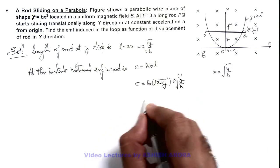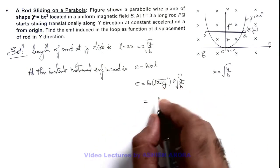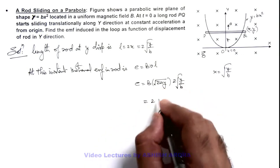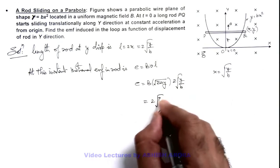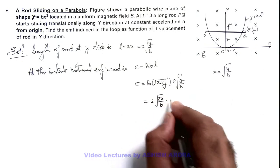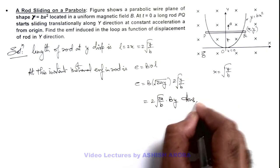On simplifying this, we are getting the result as twice of root 2ay by b, multiplied by By. That will be the answer to this problem.